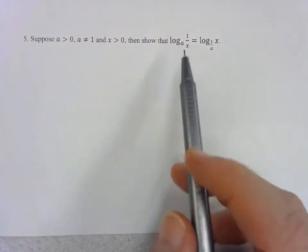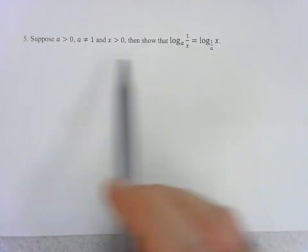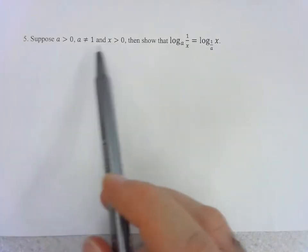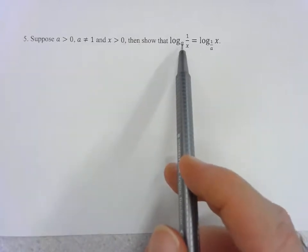They want us to show that these two logarithmic expressions are equal so long as these conditions are met. These conditions make sense since we need to make sure that a is greater than 0, not equal to 1.